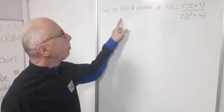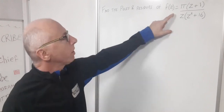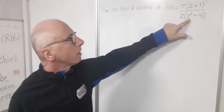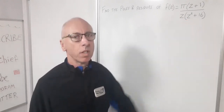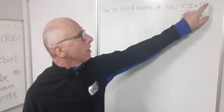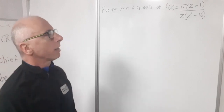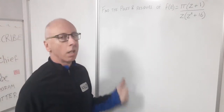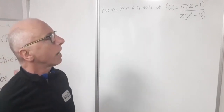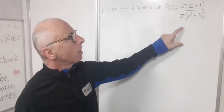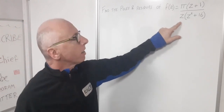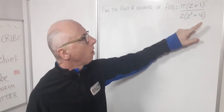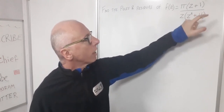This question asks us to find the poles and residues of the function π(z+i) / [z(z²+16)]. The first thing we need to do is find the poles, i.e., when this function is not analytic. We're looking for zeros in the denominator — cases when z equals zero — or zeros in the numerator.